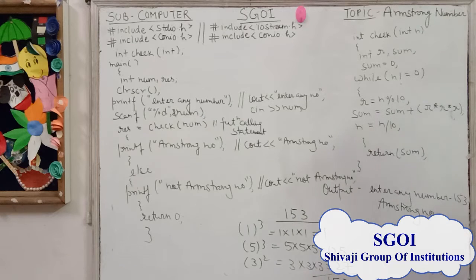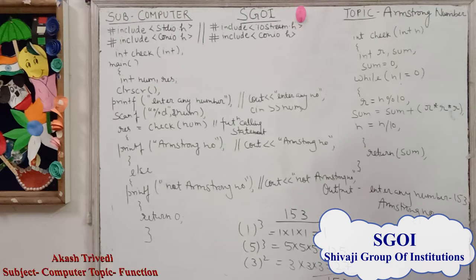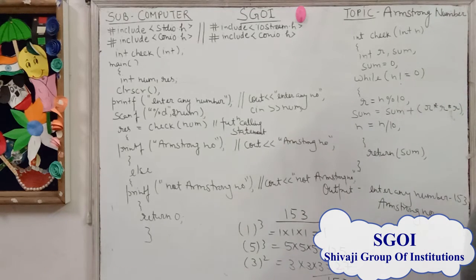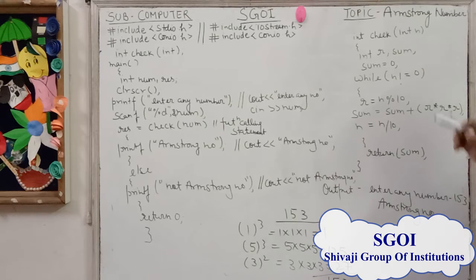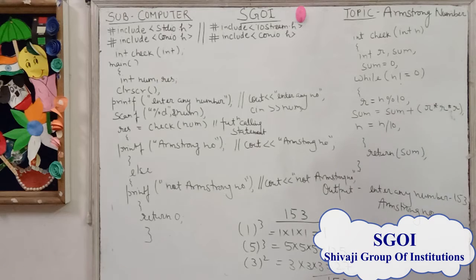We open the body of the function and declare two variables of integer data type, r and sum, and we assign 0 to sum. Then we use a while statement with the condition: while n is not equal to 0. Inside the loop: r equals n mod 10, sum equals sum plus r*r*r, and n equals n divided by 10.